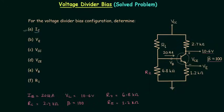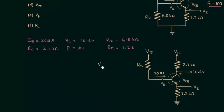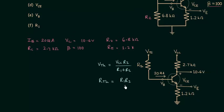First I will draw the Thevenin's equivalent circuit. VTH is the Thevenin's voltage and it is equal to VCC times R2 divided by R1 plus R2. RTH is the Thevenin's resistance and it is equal to R1 times R2 divided by R1 plus R2. The load is connected in series with RTH.